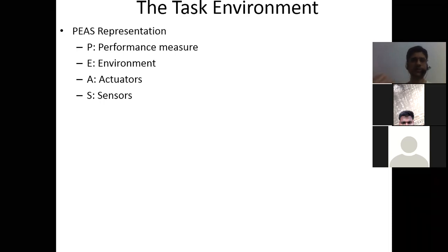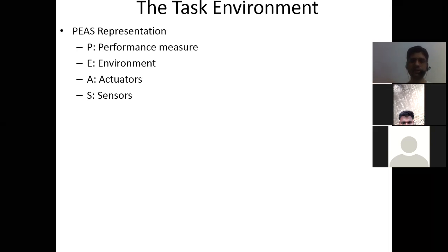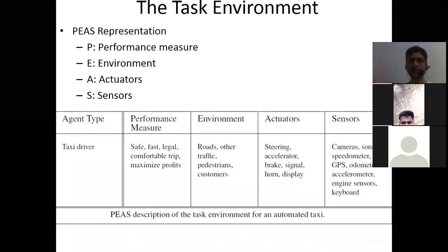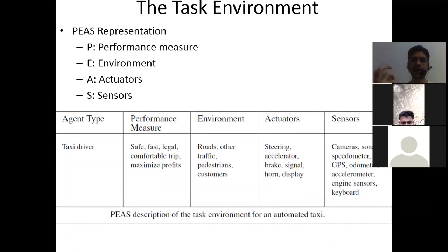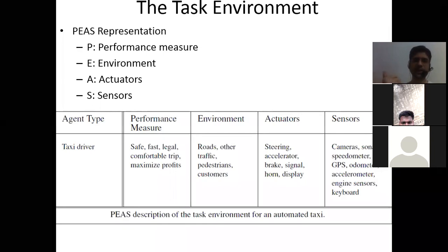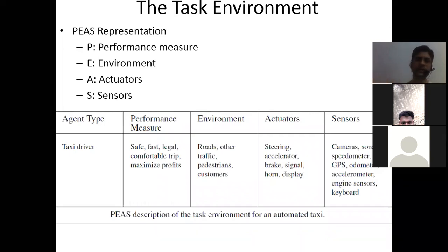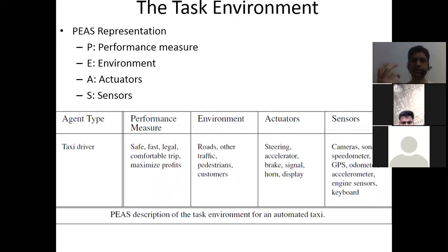For humans we talk about actuators; for machines we have effectors. Let's look at the PEAS representation using the example of an automated taxi. The agent type is a taxi driver. The performance measure criteria include: the driver must drive safely, fast, and in a legal manner — meaning stopping at red lights — provide a comfortable trip with no rash driving, and maximize profit.